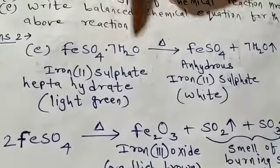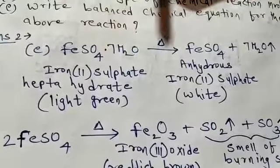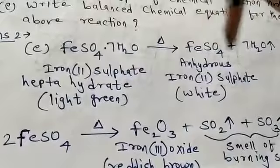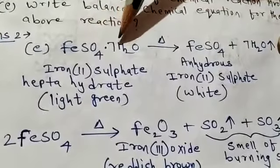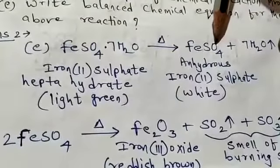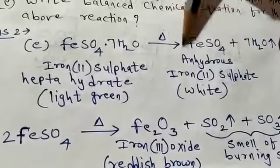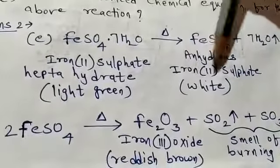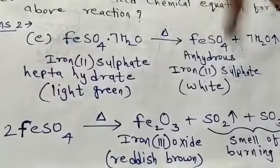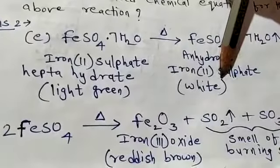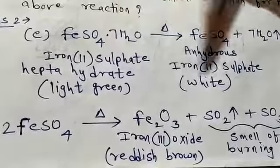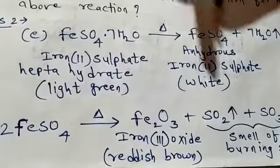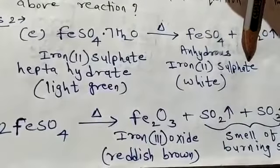On heating, iron(II) sulfate heptahydrate decomposes — it breaks down — and the 7 water molecules of crystallization are removed. It breaks down into FeSO₄ plus 7H₂O. When the water molecules of crystallization are removed, the term used is 'anhydrous.' So we get anhydrous iron(II) sulfate, also called anhydrous ferrous sulfate. Its color is white. So the light green colored crystal changes to a white colored substance — anhydrous iron(II) sulfate.